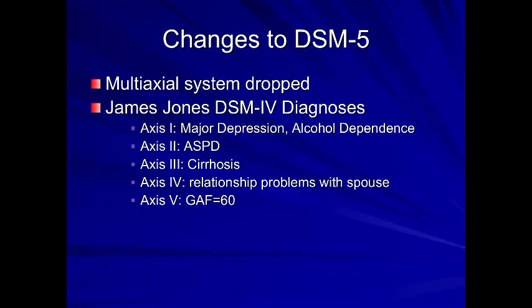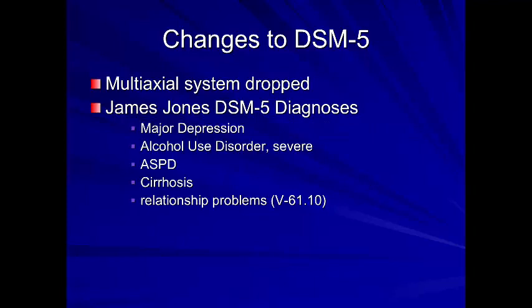Before, under DSM-4, James Jones would have major depressive disorder and alcohol dependence on Axis 1, antisocial personality disorder on Axis 2, cirrhosis of the liver on Axis 3, relationship problems on Axis 4, and a Global Assessment of Functioning score of 60 on Axis 5. Now in DSM-5, James Jones simply has major depression, alcohol use disorder — labeled as severe, reflecting the spectrum — antisocial personality disorder, cirrhosis of the liver, and relationship problems with the ICD code.